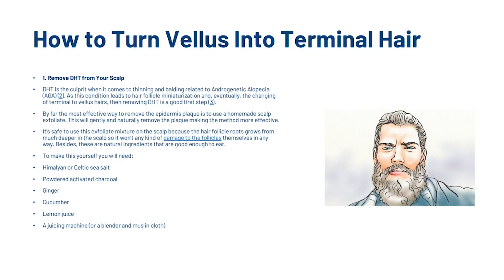So we're going to show you a few ways that can help you reverse the process. The first is to remove DHT from your scalp. DHT is the culprit when it comes to thinning and balding related to androgenetic alopecia. As this condition leads to hair follicle miniaturization and eventually the changing of terminal to vellus hairs, removing DHT is a good first step. By far the most effective way to remove DHT is to use a homemade scalp exfoliant, which will gently remove plaque making the method more effective. It's safe to use on the scalp because the hair follicle roots grow from much deeper in the scalp, so it won't cause any damage to the follicles. And besides, these are all natural ingredients.